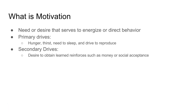In general, the primary drives for motivation are hunger, thirst, the need to sleep, and the drive to reproduce. Secondary drives are desires or needs to obtain learned reinforcers — things like money, social acceptance, and social status. These are secondary drives that we can sometimes use to satisfy primary drives, but what really drives us is the need to survive: eat, drink, sleep, and reproduce.